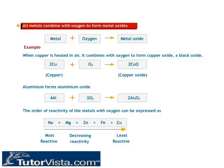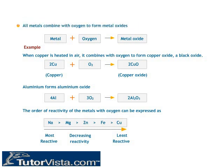All metals combine with oxygen to form metal oxides. For example, when copper is heated in air, it combines with oxygen to form copper oxide, a black oxide. The order of reactivity of the metals with oxygen can be expressed as shown here.